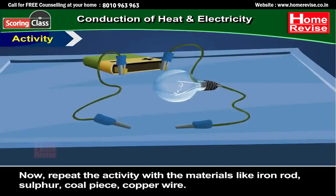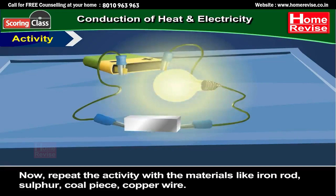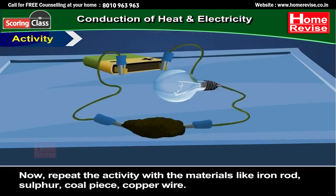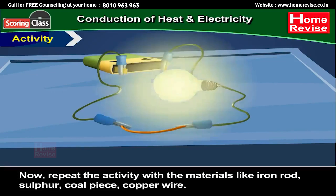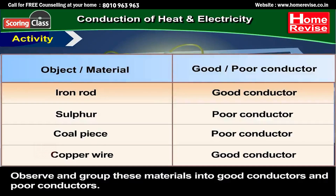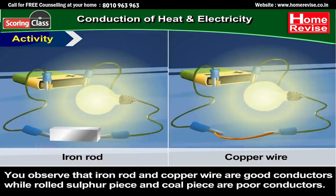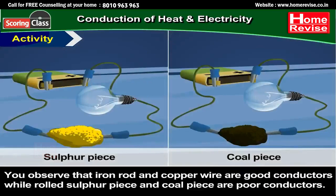Now repeat the activity with materials like an iron rod, sulfur, a coal piece, and copper wire. Observe and group these materials into good conductors and poor conductors. You observe that the iron rod and copper wire are good conductors, while rolled sulfur pieces and coal pieces are poor conductors.